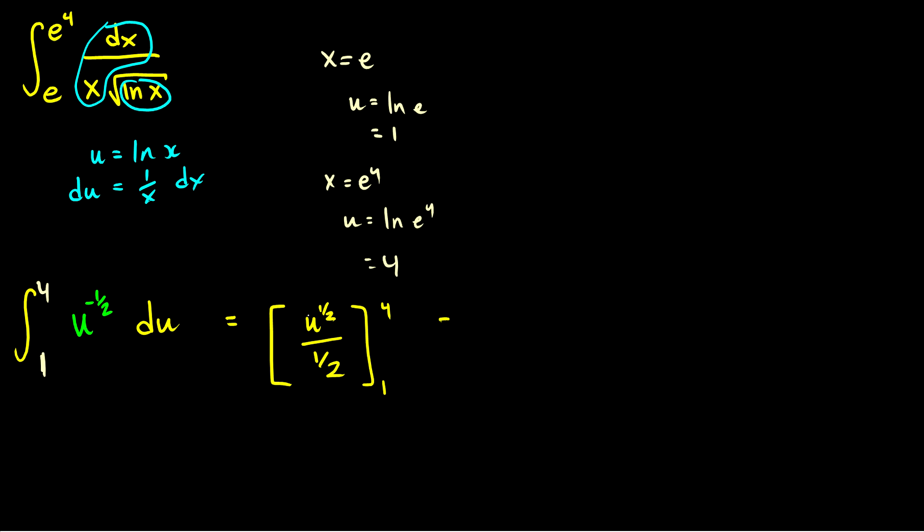So we just do some substitution here. This will be the square root of 4 over 1 half minus the square root of 1 over 1 half, which is just going to be equal to 2 minus 1 all over 1 half, which is equal to 1 over 1 half, which is just equal to 2.